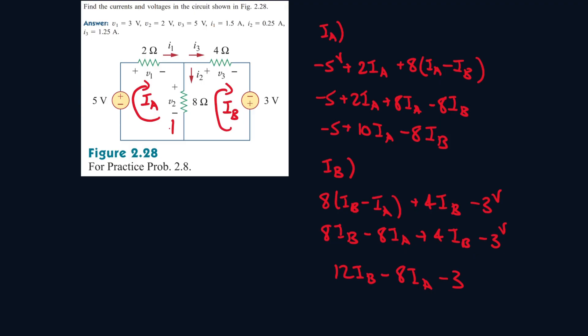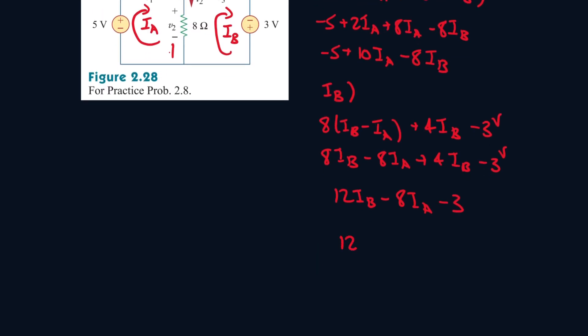Okay, so now we have two equations and two unknowns. Let's try and isolate for one of them. So let's do this: 12 IB equals 8 IA plus 3, divide both sides by 12. So that means IB is equal to all of this.